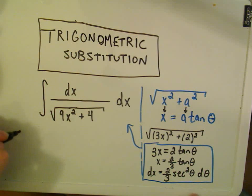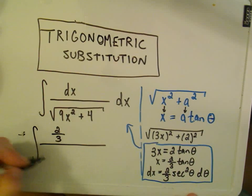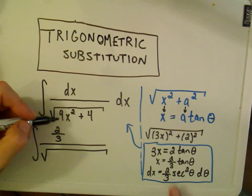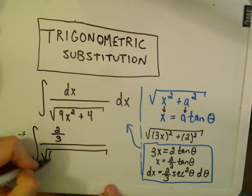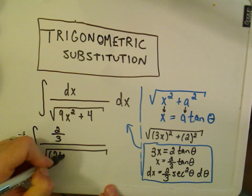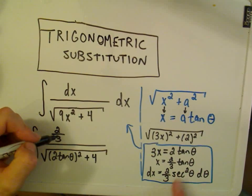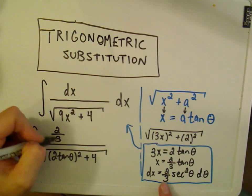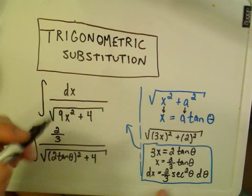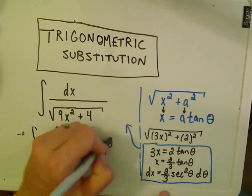So I'm going to plug all of this stuff in. So it says dx is equivalent to 2 thirds, all divided by the square root. Think about, again, 9x quantity squared being written as 3x quantity squared. And we said that 3x is 2 tangent theta squared. And then I still have my plus 4. dx is just 2 thirds secant squared theta d theta.